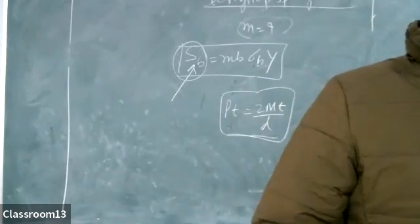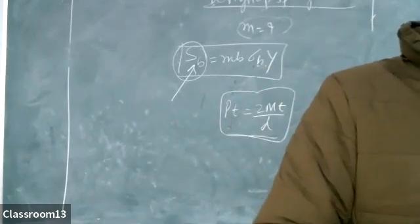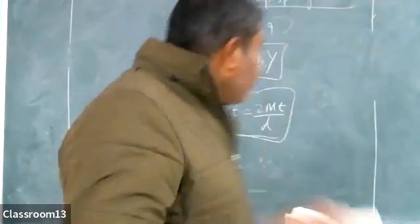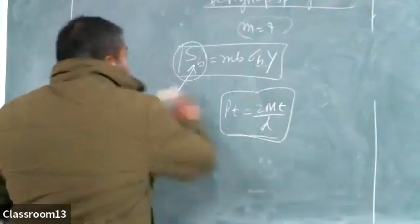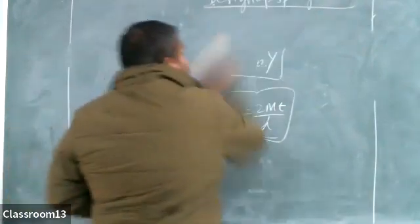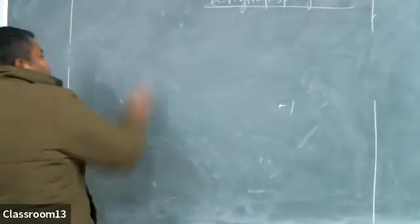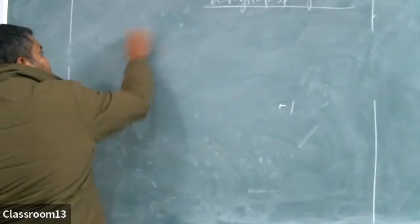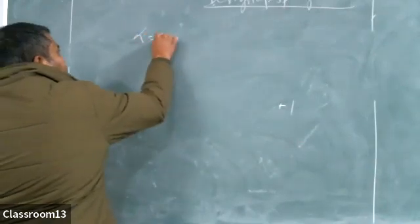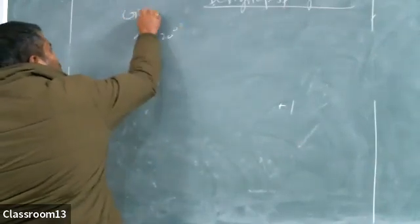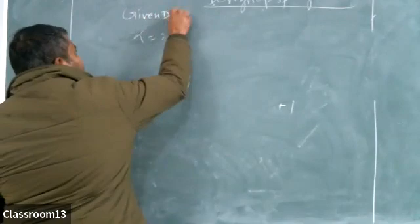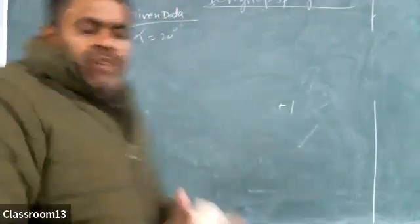The question states: it is required to design a pair of spur gears with 20 degree full depth involute profile. So alpha is 20 degrees.